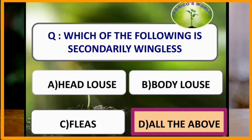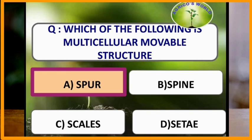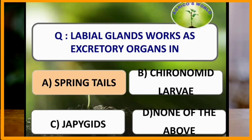Which of the following is a multicellular movable structure? Spur is a multicellular movable structure. Labial glands work as excretory organs in springtails.